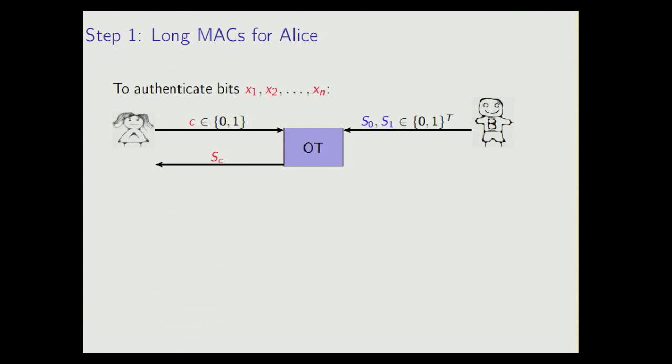To authenticate these bits, we're going to use the OT functionality. What this does is that Bob will have two messages, S0 and S1, that he inputs to the functionality. Alice will input a choice bit C, and then out of the functionality will come the message that Alice chose. And no one learns anything else. Now, for this particular application, we need the messages to be of length T, where T is some large value, essentially any polynomial in the security parameter.